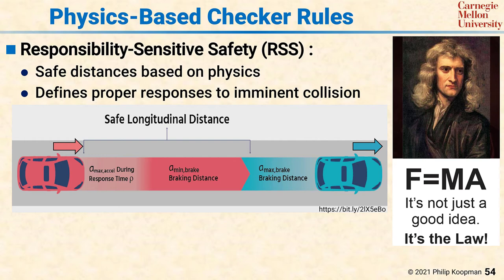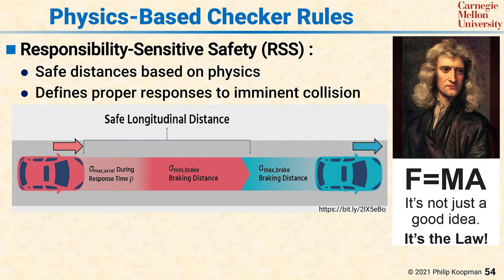While the math can guarantee no possible collision, there are some practical considerations to be taken into account. The first is that the proofs assume you have an absolutely perfect model of the world. That means you need precise knowledge about the environment, such as the road surface friction along the entire stopping distance, the other vehicle capabilities such as how good its brakes are, and own vehicle capabilities such as whether your brakes are at maximum effectiveness or have recently become wet or overheated. In practice, it's almost impossible to have precise knowledge, so approximations and safety margins need to be added.